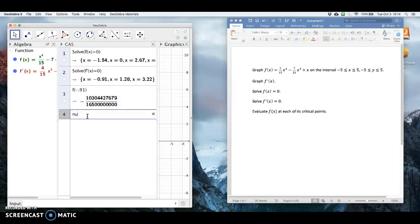So to turn that to decimal, I could type numeric. We get numeric expression, and I'll then type f, parentheses, minus 0.91. And we get minus 0.62.